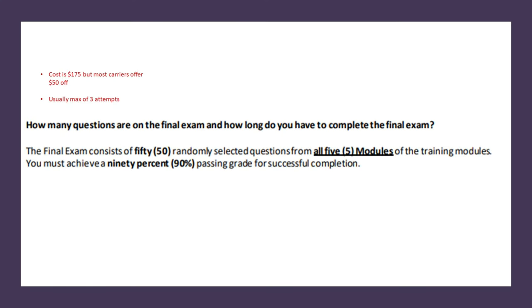You get a maximum of three attempts, usually per carrier, to pass. If you don't pass Medicare certification through AHIP within three tries, some carriers will not allow you to sell their products. Remember, there are five modules and 50 questions across all five that make up the final exam. You need a score of 90 percent to pass, which means with 50 questions you can only miss five. It is not a lot of room for error, so I encourage you to be fresh, have gone through all the trainings, and be fully prepared before taking the exam.